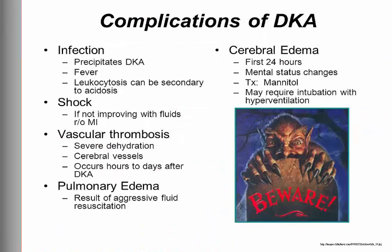DKA is a serious condition that must be treated promptly. Ensure there is a patent airway and administer oxygen via nasal cannula or non-rebreather mask. Because fluid imbalance is potentially life-threatening, the initial goal of therapy is to establish IV access and begin fluid and electrolyte replacement. Typically, the initial fluid regimen consists of 0.45% or 0.9% sodium chloride to restore urine output to 30–60 mL/hour and raise blood pressure. When blood glucose levels approach 250, 5–10% dextrose is added to prevent hypoglycemia and a sudden drop in glucose that can be associated with cerebral edema.